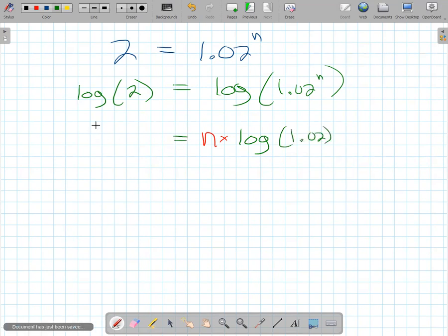So this then becomes N times log of 1.02. On the other side, I have log of 2. I want to know what N is. So to break this multiplication, I'm just going to divide by this thing called log of 1.02 on both sides.